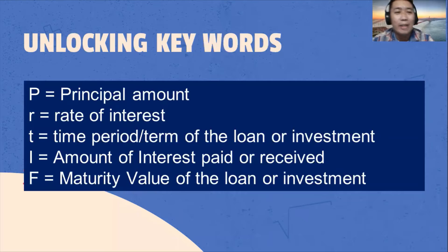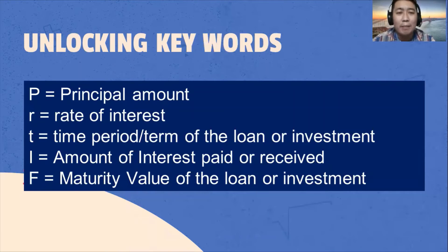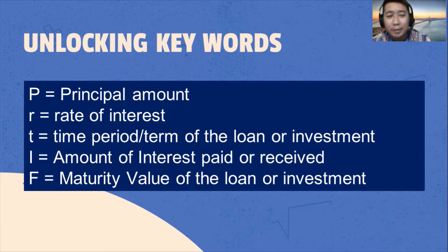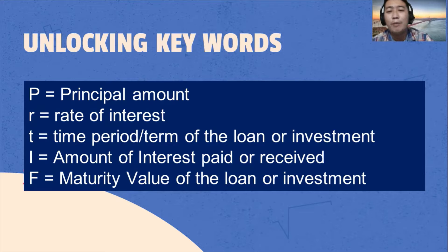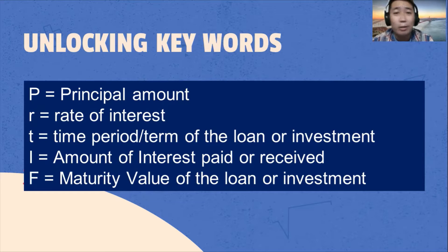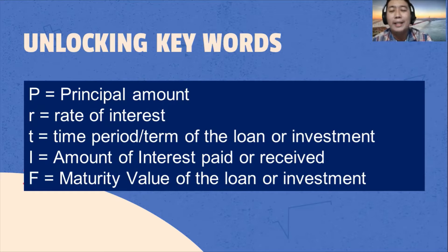Let's try to unlock keywords. We have P, which is the principal amount — that is the amount of money borrowed. R is the rate of interest, that is the percentage charge. T is for time, or the time period, term of the loan or investment. We have I, or interest — the amount of interest paid or received. Then F, that is the maturity value or the face value of the loan or investment.